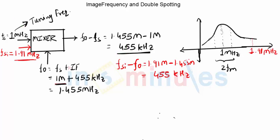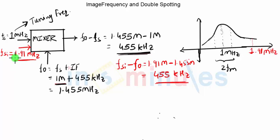There will be two types of signals after the mixer stage. One signal will be around 455 kilohertz but it will contain noise, because it is coming from 1 megahertz frequency which is not a valid station. The second signal will also be present around 455 kilohertz, but this signal will contain valid information because it comes from the valid radio station at 1.91 megahertz.